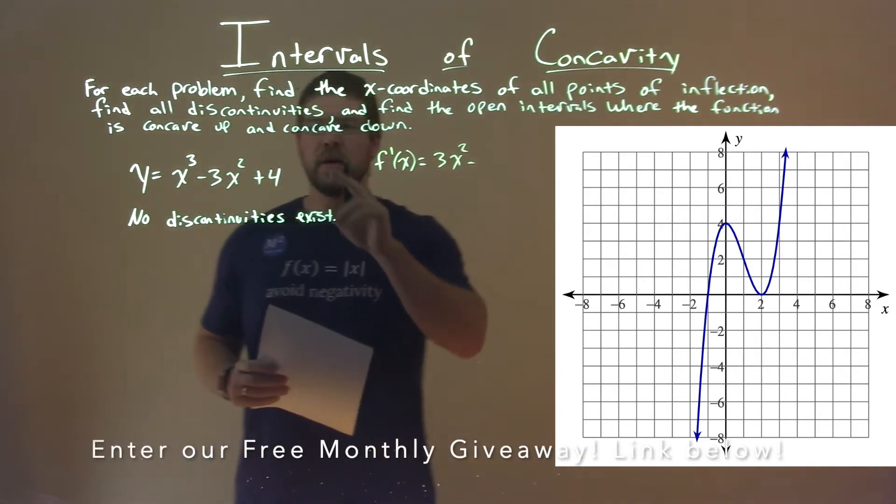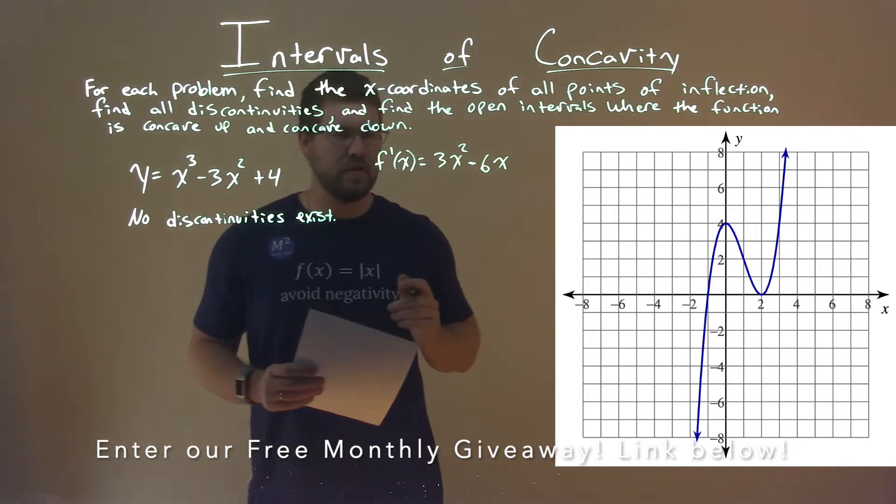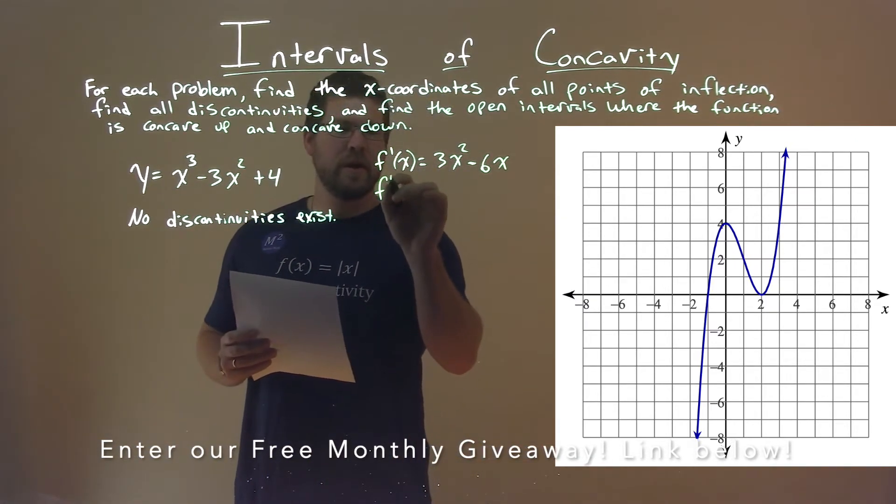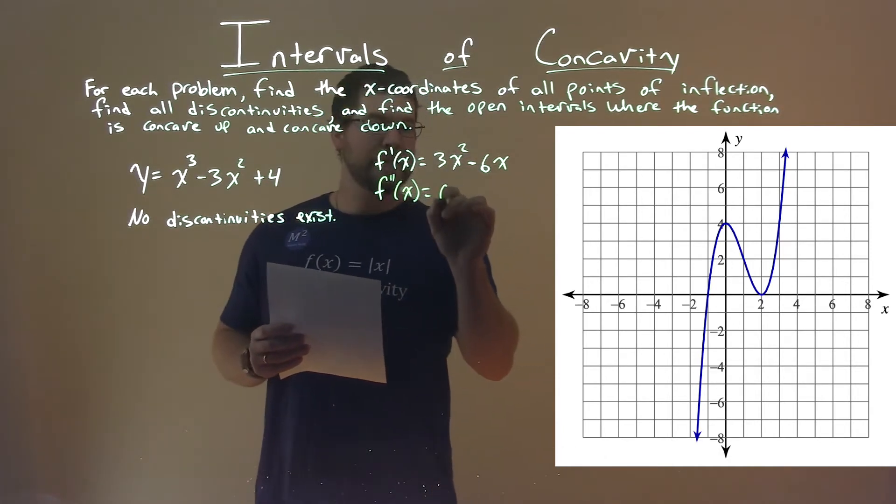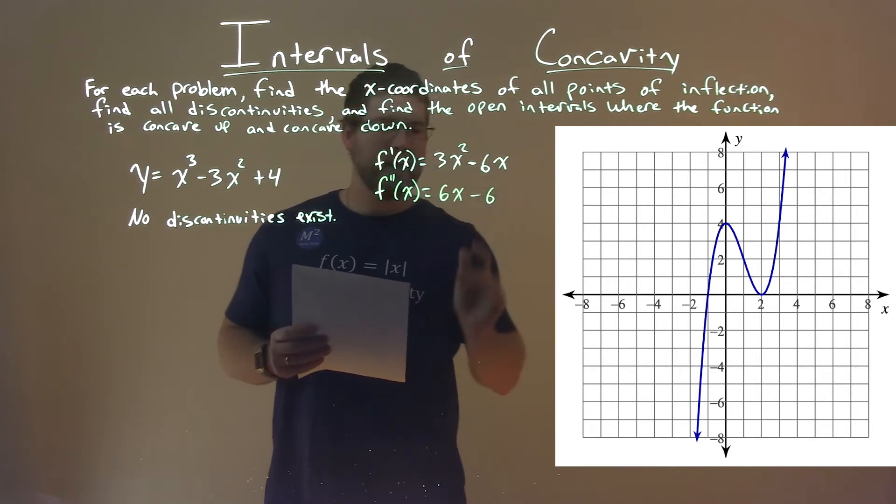Keep going, we have to find the second derivative here, so f''(x) here. 2 comes down, times 3 is 6x to the first power now, and we just have minus 6 here.